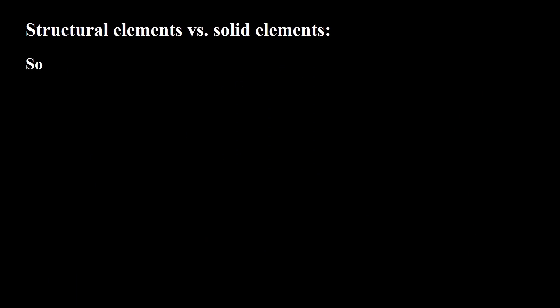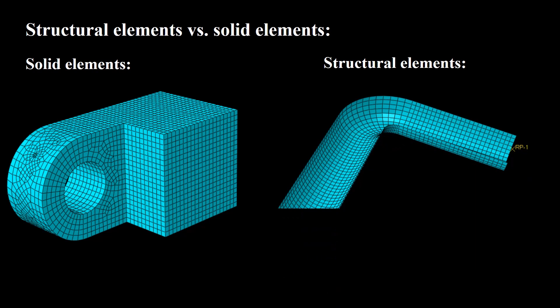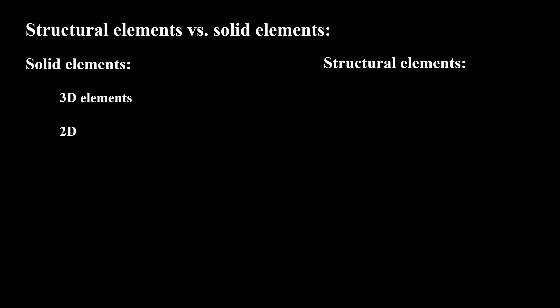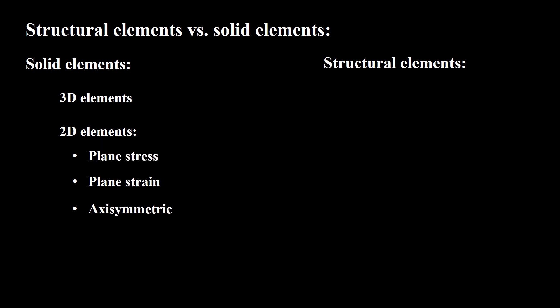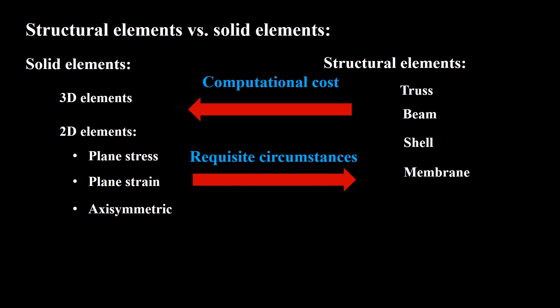The first step to choose the appropriate elements for your simulations is to decide whether you need to employ solid elements or structural elements. Solid elements contain 3D and 2D elements, and all plane stress, plane strain, and axisymmetric elements are 2D solid elements. Structural elements contain truss, beam, shell, and membrane elements. Despite solid elements, structural elements significantly reduce computational cost, but we cannot use structural elements unless certain circumstances are satisfied.